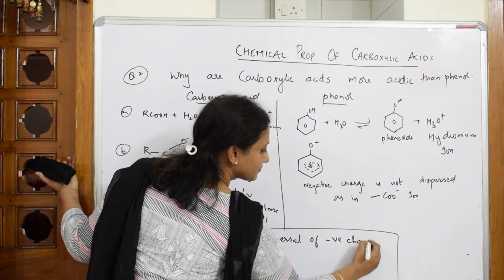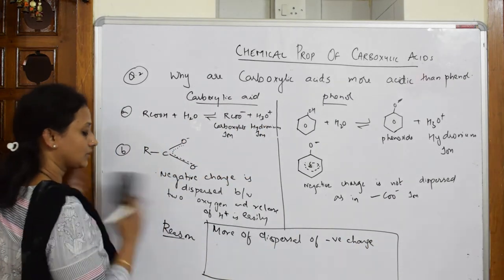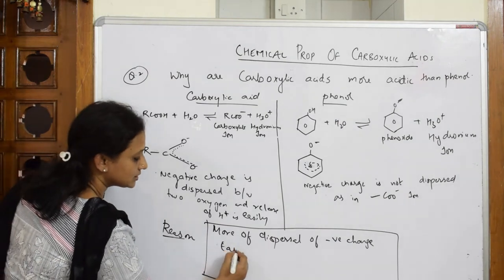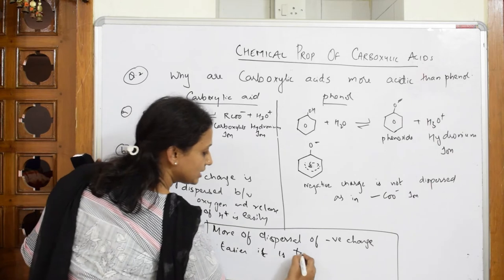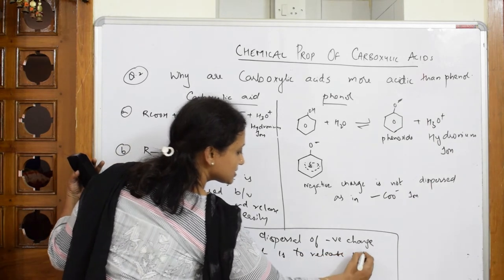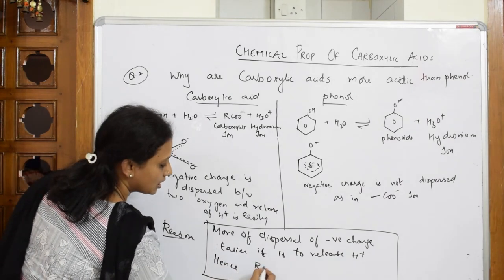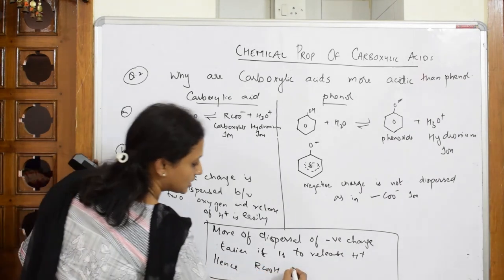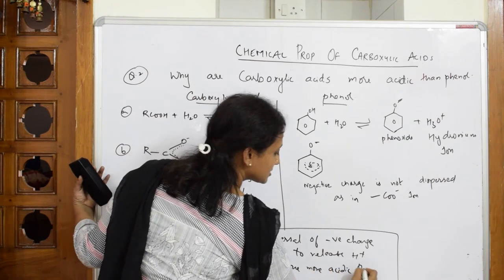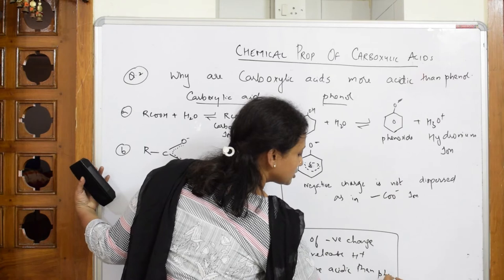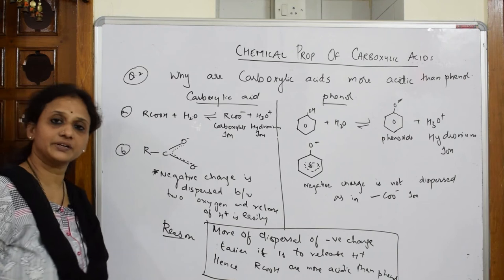More dispersal of negative charge means it is higher and easier to release H+. Hence, carboxylic acids are more acidic than phenols. This is your answer — finish it by showing these two columns. This is the keyword that will appear in board exam answers.